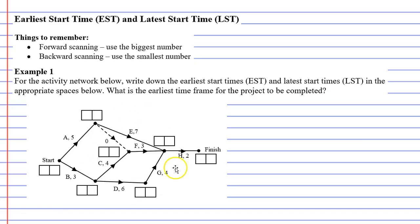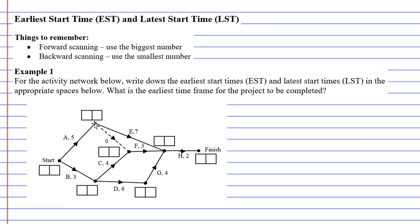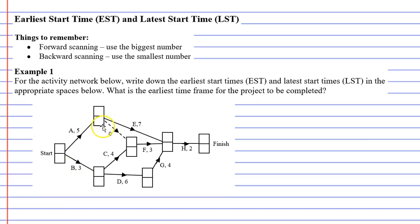You might have noticed when looking at the activity network below that every vertex has two squares next to it. The square at the left is used for the earliest start time, and the square on the right is used for the latest start time. The way we represent earliest start times and latest start times differs depending on who drew up the activity network.